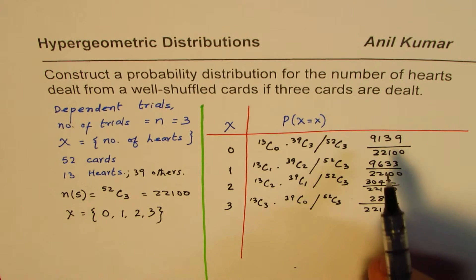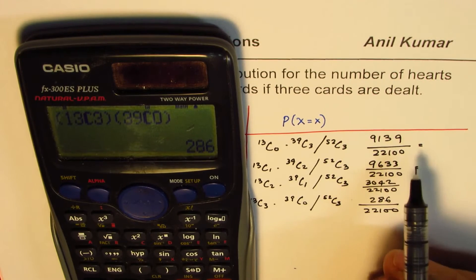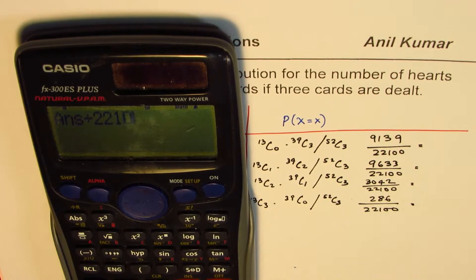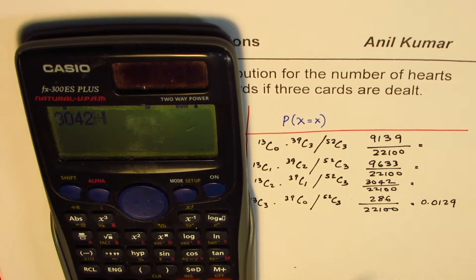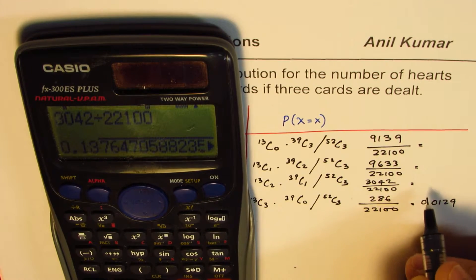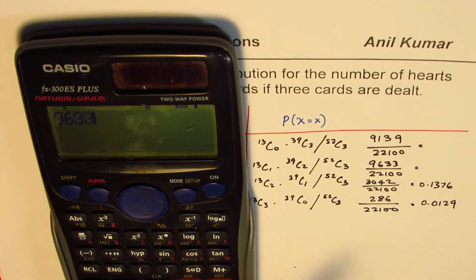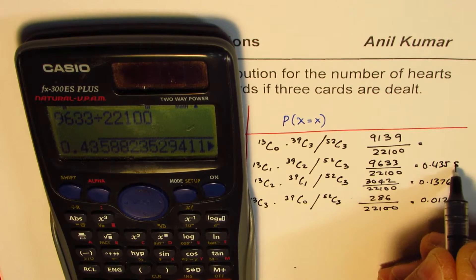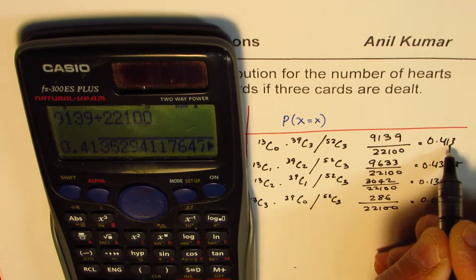Now let's convert these to decimals. Starting from the bottom: 286 divided by 22,100 gives 0.0129. Then 3,042 divided by 22,100 gives 0.1376. Rounding to three decimal places: 9,633 divided by 22,100 gives 0.4358. And 9,139 divided by 22,100 gives 0.4135.